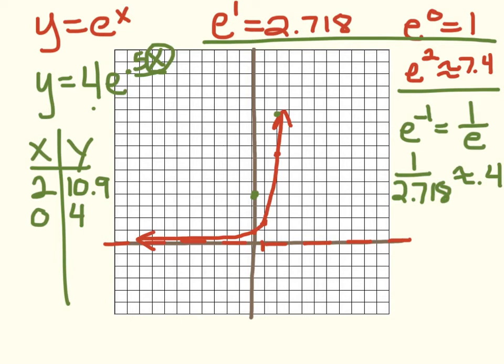So, I could then plug in a negative 2 for X. Negative 2 and 0.5 times negative 2 would give me negative 1. So, I know E to the negative 1 is 0.4. I just need to multiply that by 4 and get about 1.6. So, negative 2, 1.6 would be about right there.